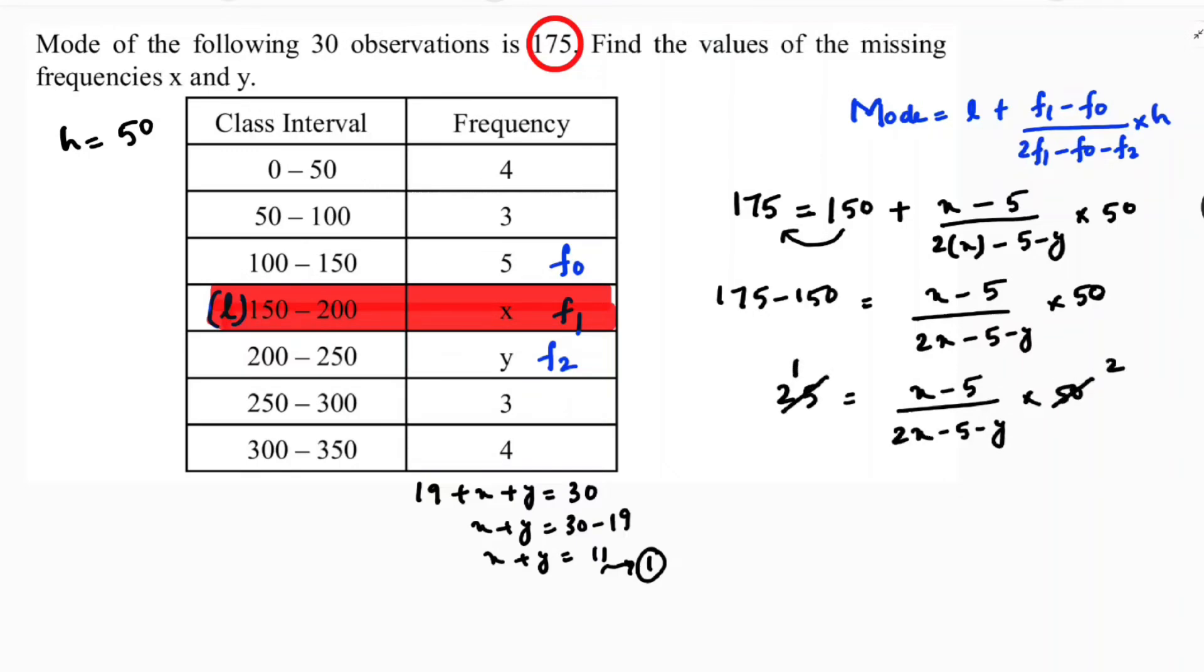Now see here, 25 times 1, 25 times 2, so now if we cross multiply 1 into 50, if we cross multiply 1 into 2, x minus 5 minus y equals x minus 5 into 2, so 2x minus 5 minus y equals 2x minus 10.